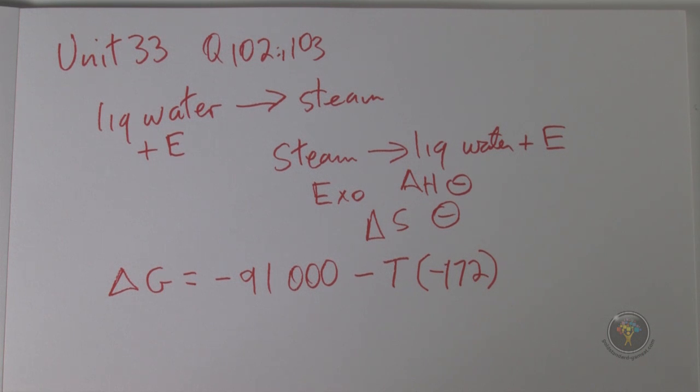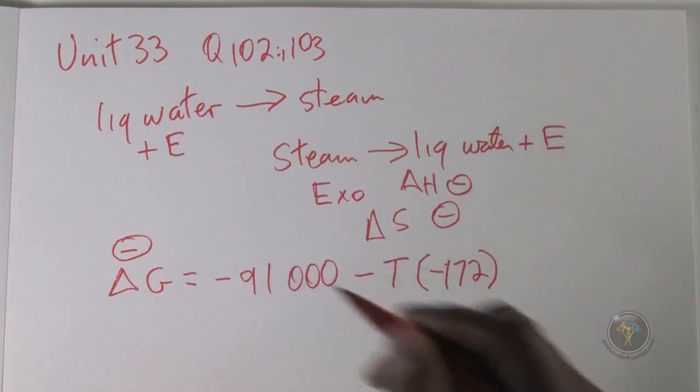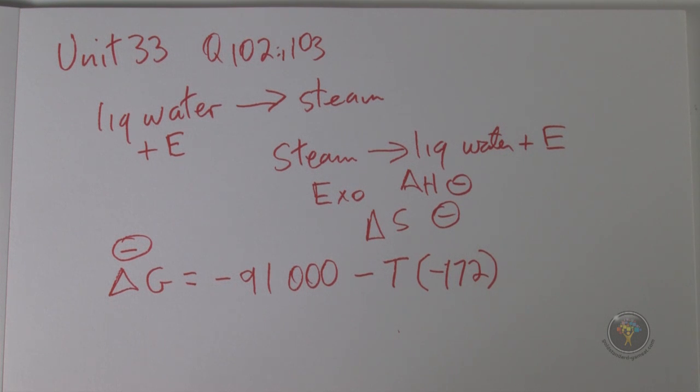Now when you look at this reaction, you have to understand that if this reaction is to be spontaneous at all, delta G has to be negative. Delta G is negative for spontaneous reactions, it's equal to zero for reactions at equilibrium, and it's positive for non-spontaneous reactions.